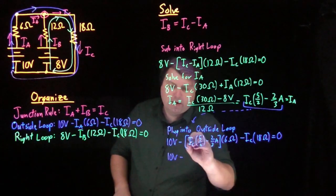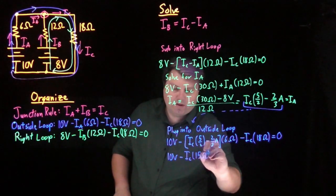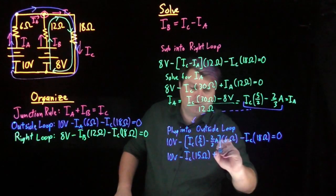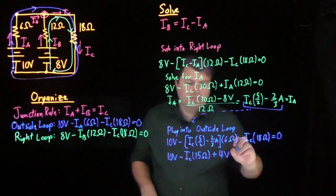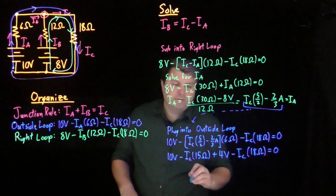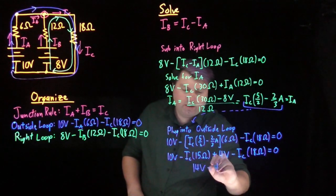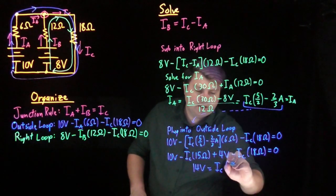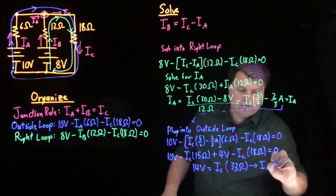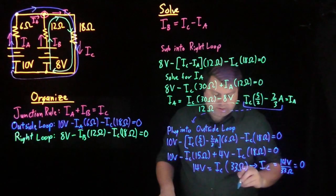So I have 10 volts. 5 times 6 is 30 divided by 2 is 15. So I have Ic times 15 ohms minus minus gives me a plus 4 volts minus Ic times 18 ohms equals 0. So if I bring all of my Ic's over, I get 10 plus 4 is 14 volts equals Ic times 15 plus 18 is 33 ohms. So I get that my current Ic is 14 volts over 33 ohms or roughly 0.42 amps.